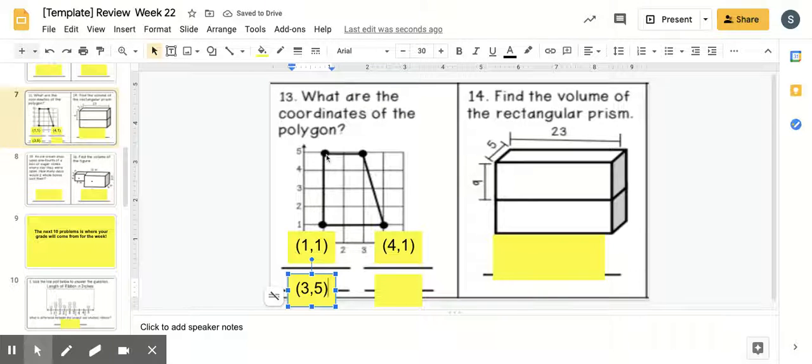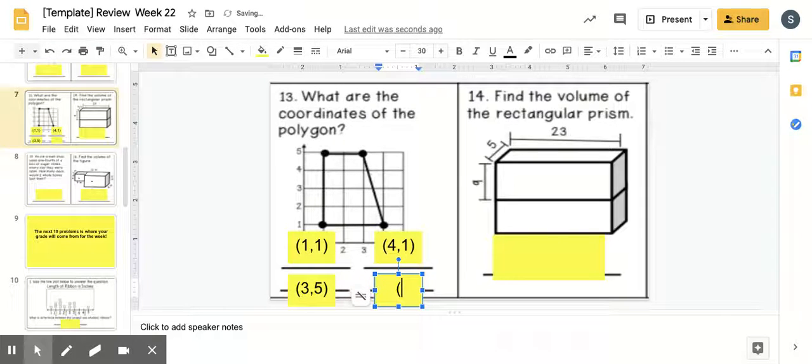And finally, our last coordinate, or our last point right here is going to be right 1 and up 5. So, you're going to put the coordinates, 1, comma, 5. Alright?